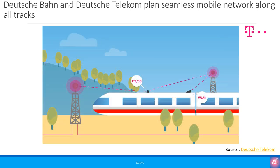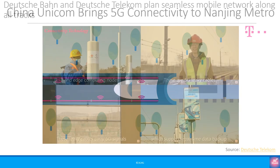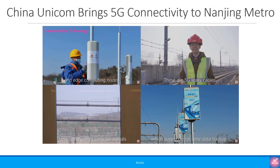When the train is outside in the open, mobile towers would provide the necessary coverage for all forms of connectivity. When the train goes into the tunnels, the leaky feeders would provide the necessary connectivity. Huawei has shared some details of how China Unicom brought 5G connectivity to Nanjing Metro — it is a similar combination of outdoor base stations and leaky feeders.